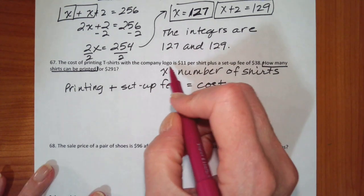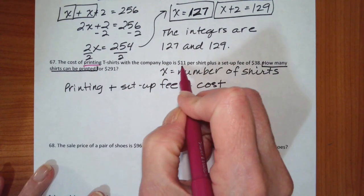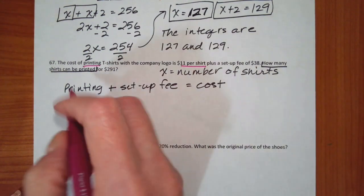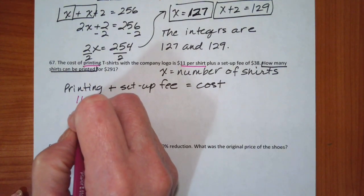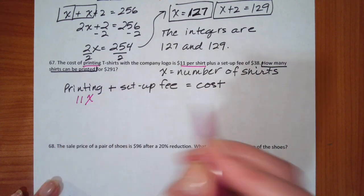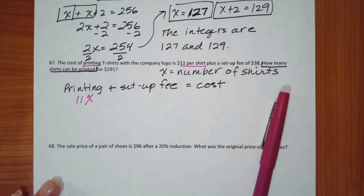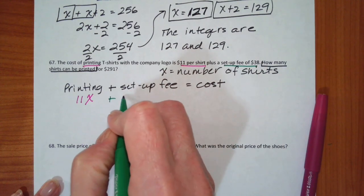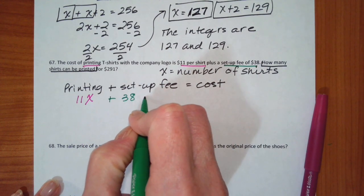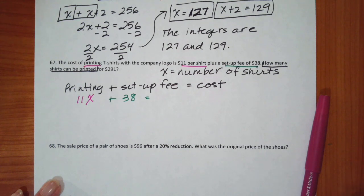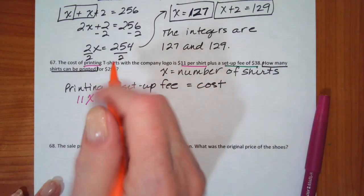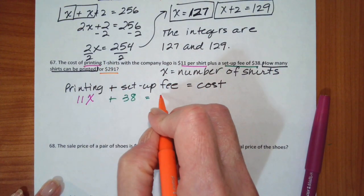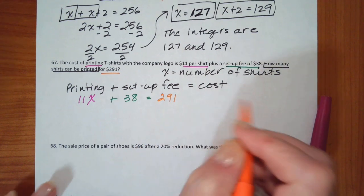Well, the printing is $11 per shirt. So 11 times the number of shirts, the setup fee is $38, and the total cost is $291.